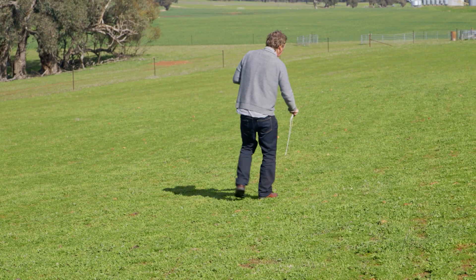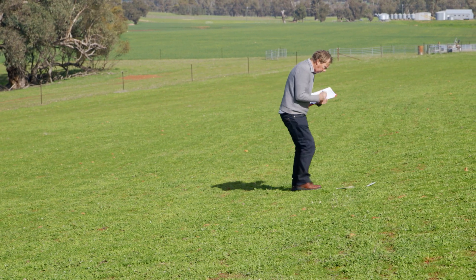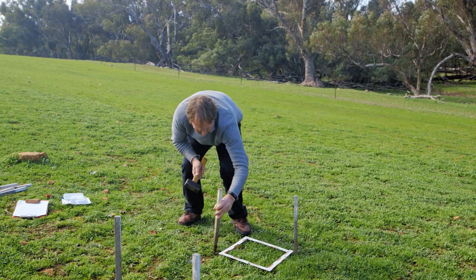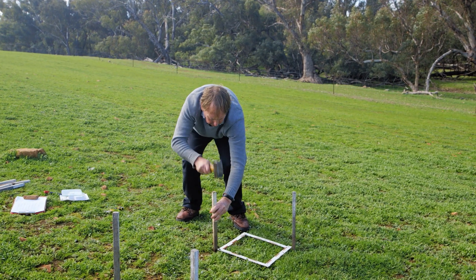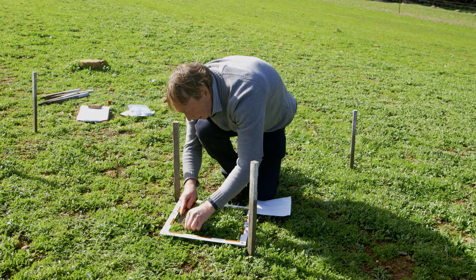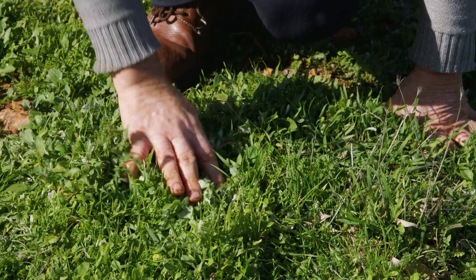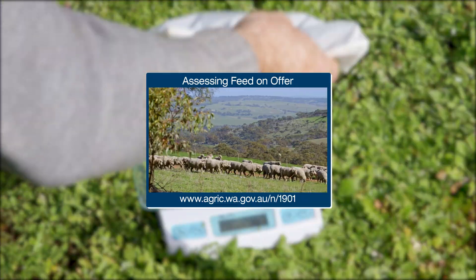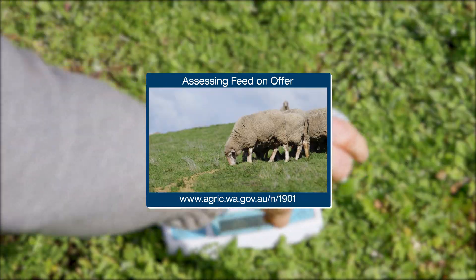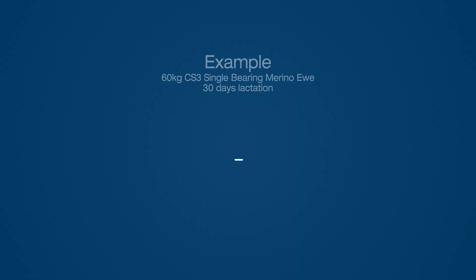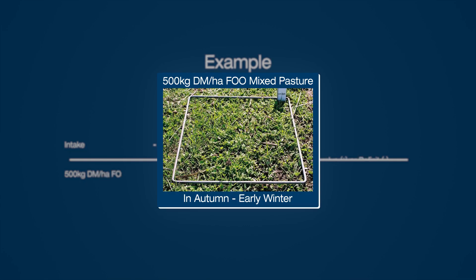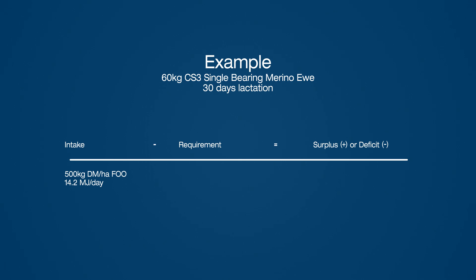Next, work out how much energy the ewes are getting from the feed in the paddock. To do this we need to assess the pasture feed on offer, or FOO for short. If you don't know how to assess the FOO, have a look at this video. Let's say there is 500 kilograms of dry matter per hectare FOO in the paddock — based on our example, this will provide the ewe with 14.2 megajoules of metabolisable energy per day.